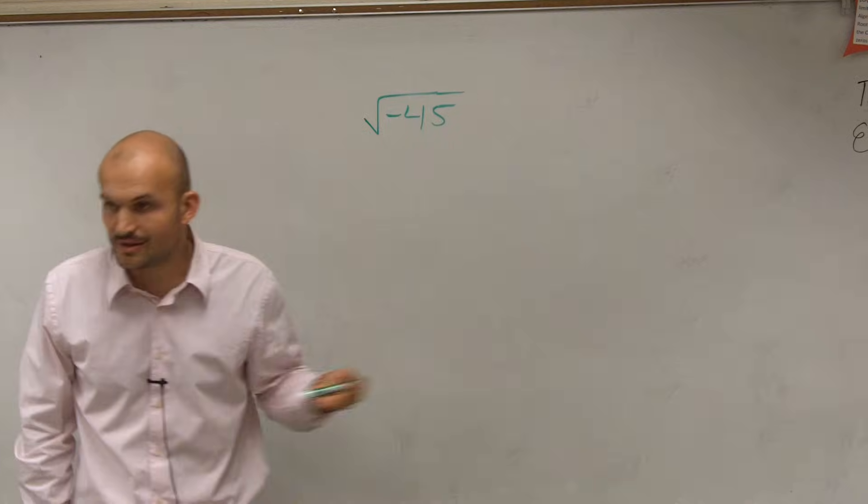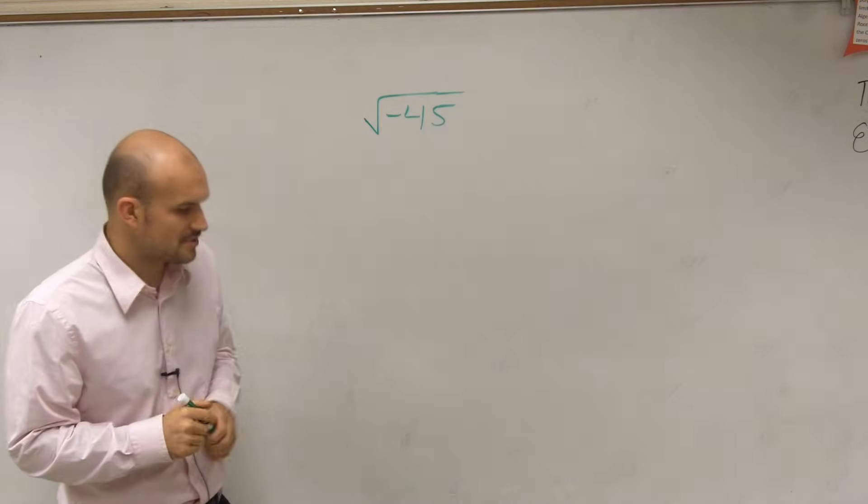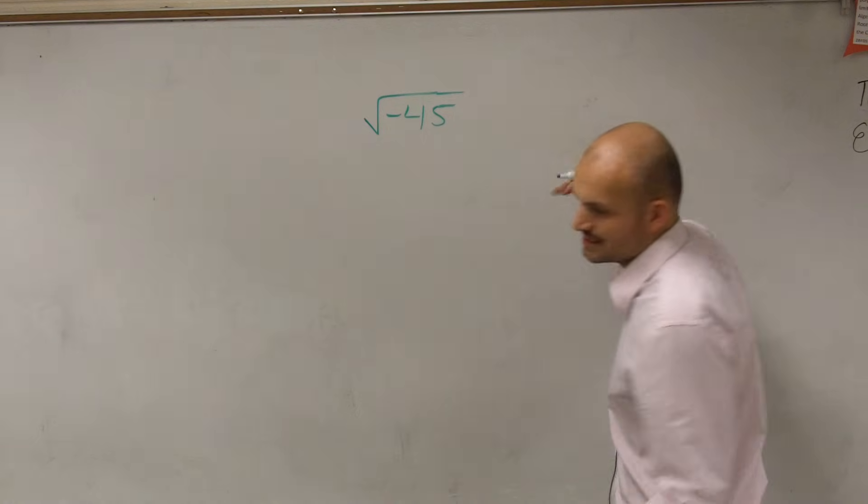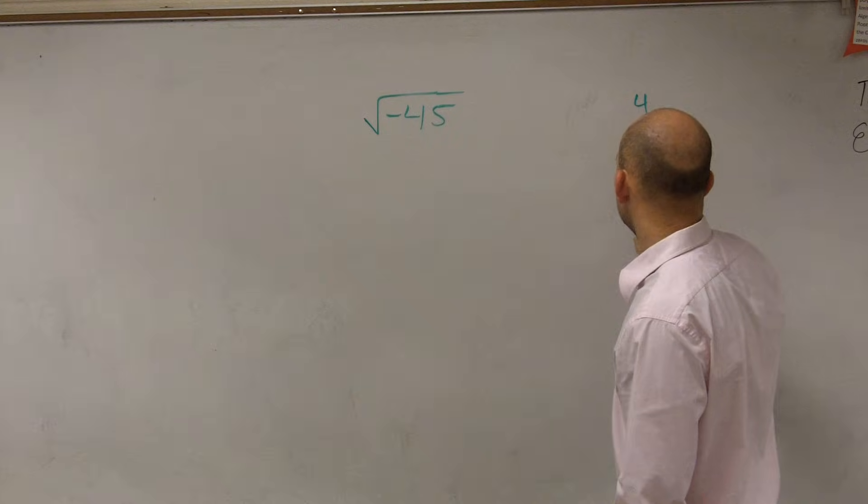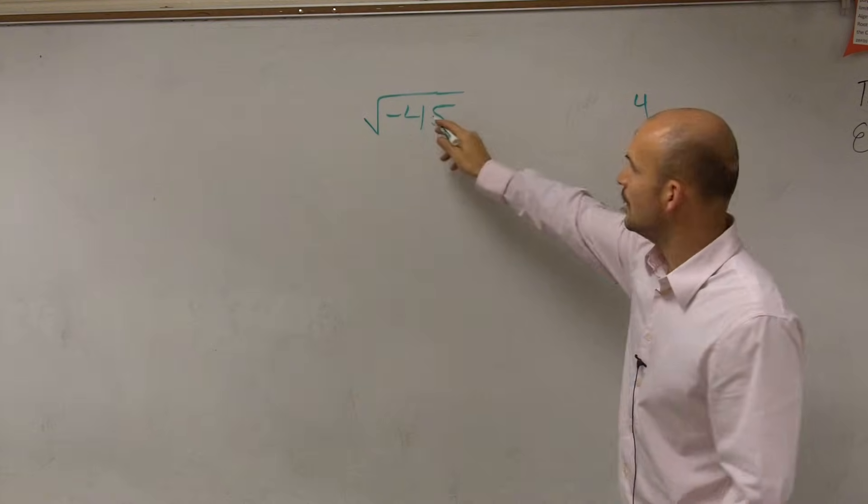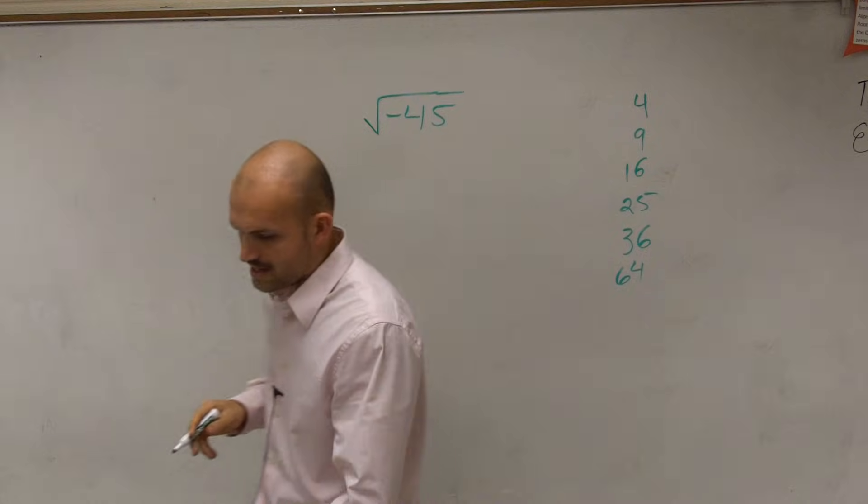Well, remember, we need to simplify the radicals. So hopefully you guys remember what square numbers look like. And this is the easiest way I like to simplify radicals. I write down the square numbers all the way up to what's in my radicand.